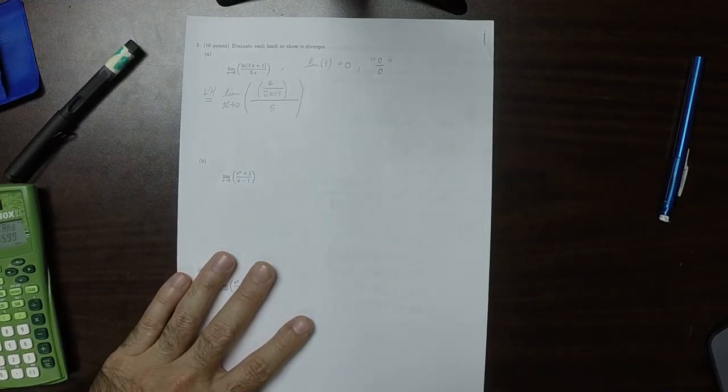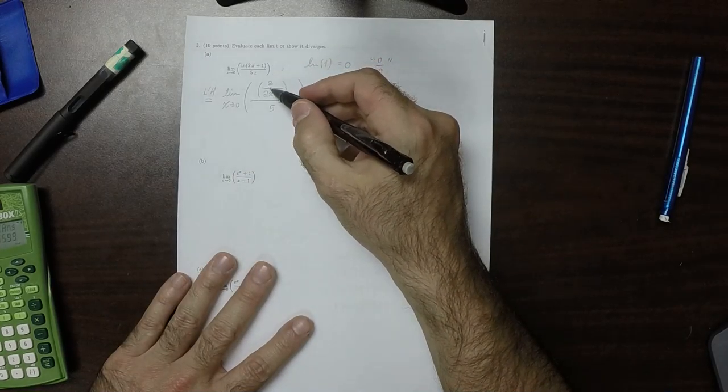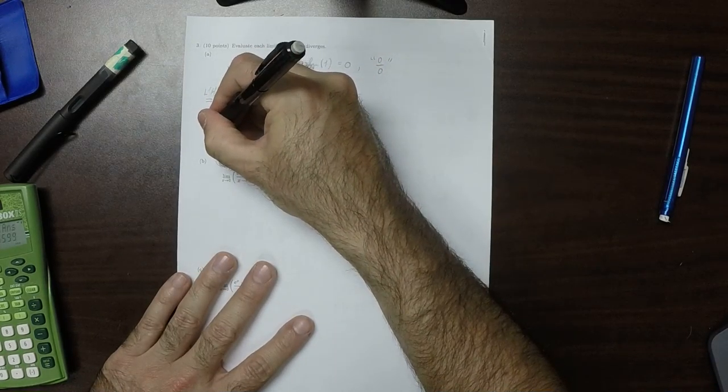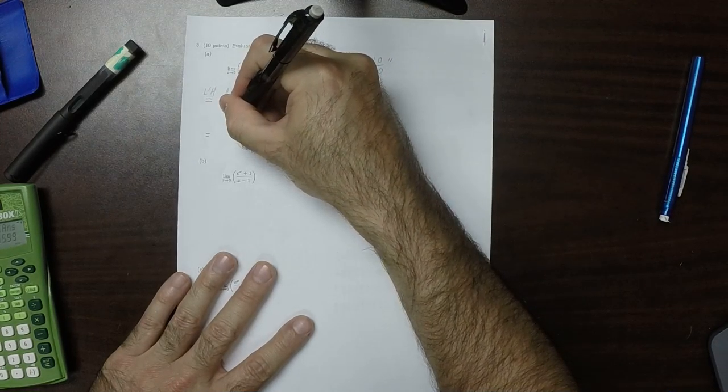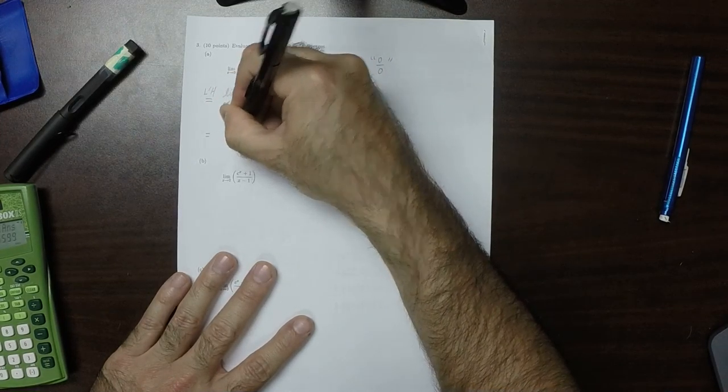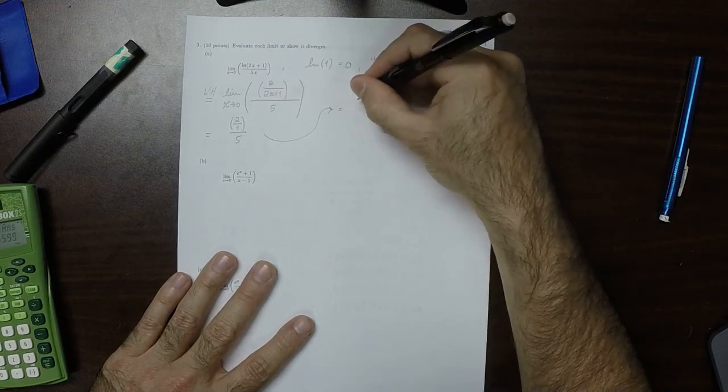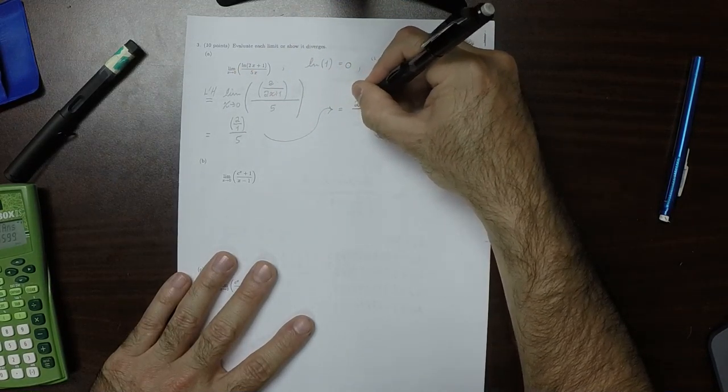And now this limit is no longer indeterminate because that's 2, that's 1, that's 5, at the limit point x is 0. So this is 2 over 1 divided by 5. So the answer is 2 fifths.